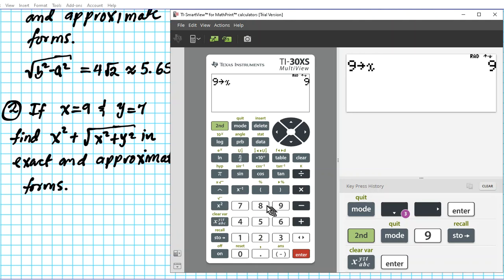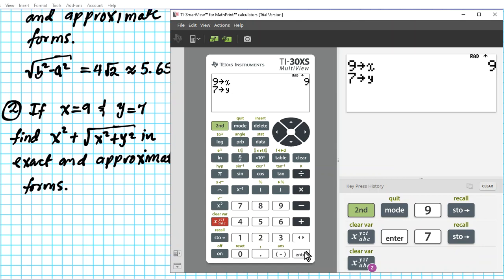Alrighty. Nine will be stored in X. Press it once. Enter. Nine stored in X. Seven will be stored in Y. One, two. Press it twice. And then we're now looking at X raised to the second power.